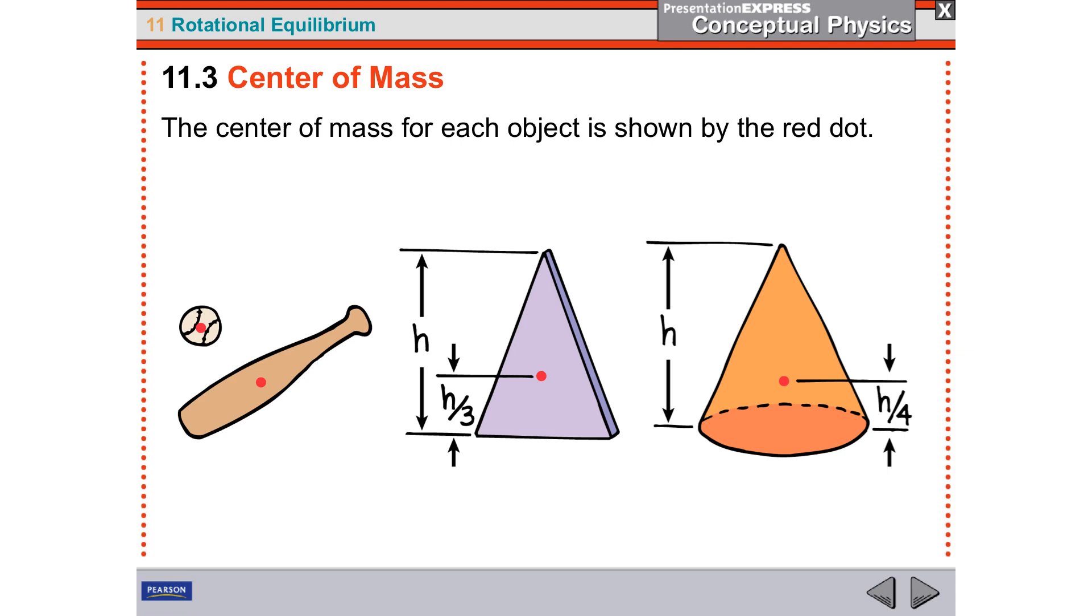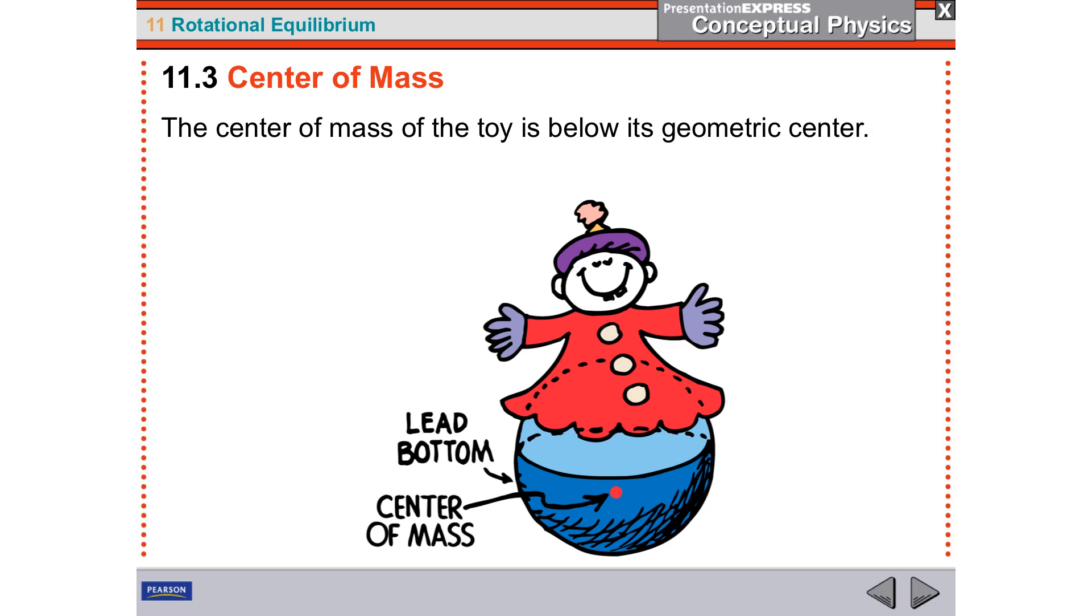So just as a kind of a rule of thumb, it's going to be towards the heavier part. So if you have a baseball bat and you have a skinny area and a thicker area, the center of mass is going to be, of course, towards the thicker area and not the thinner.